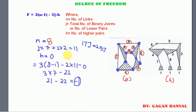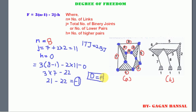The result is minus one. Any mechanism having minus one degree of freedom is known as a superstructure. Mechanisms having degree of freedom equal to zero are known as a structure. So the difference between structure and mechanism is that a structure has zero degree of freedom, whereas a mechanism has degree of freedom greater than zero. If it is minus one, it is known as a superstructure.